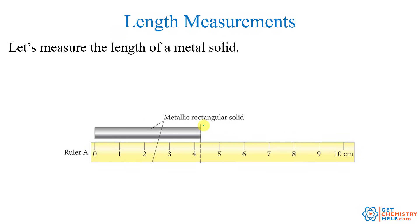Let's look at an example. Here's a ruler marked in centimeters, and we want to measure the length of this rod. We record whatever numbers are clearly marked on the ruler and then estimate one more digit beyond that. I can see it's clearly marked at four point something, and then I estimate one more — so you might say 4.2 centimeters, or maybe you think it's closer to three, so 4.3 centimeters. What you don't do is estimate more than just one place and say 4.217 — you can only estimate one more digit beyond whatever is clearly marked on the device.